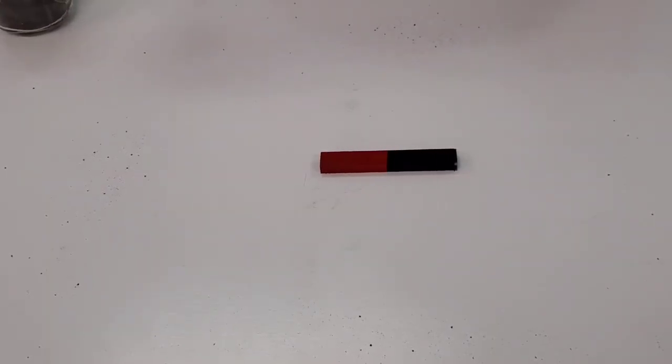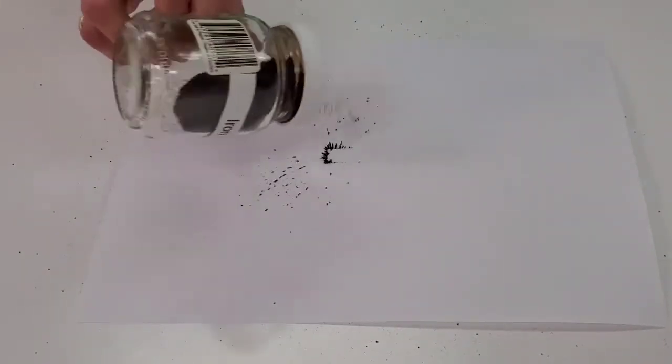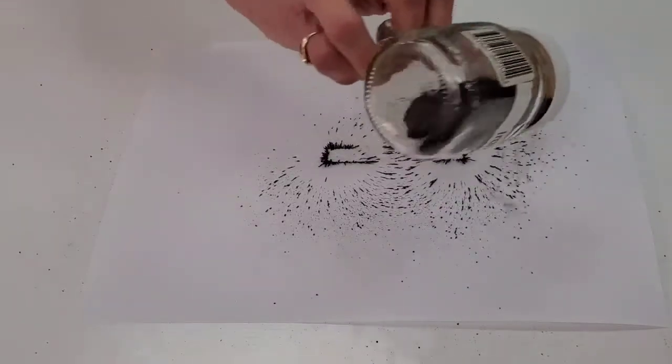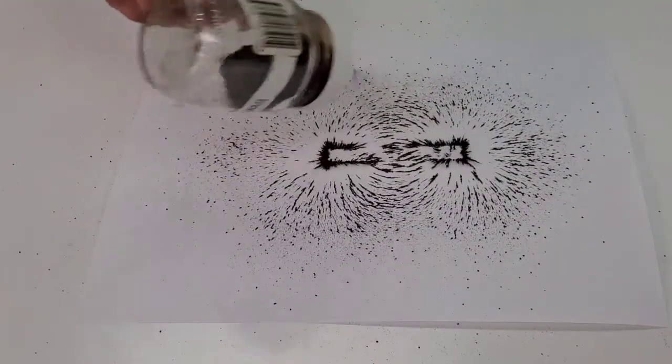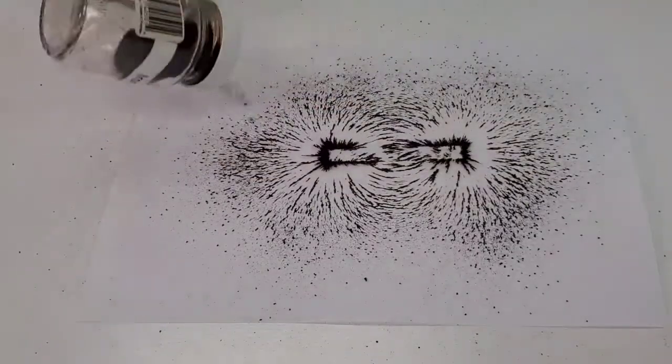Now let's look at the shape that the iron filings take when they are placed over the magnet. So we'll put a magnet underneath there. Notice the iron shavings start to take the shape of the magnetic field of the magnet. That's amazing.